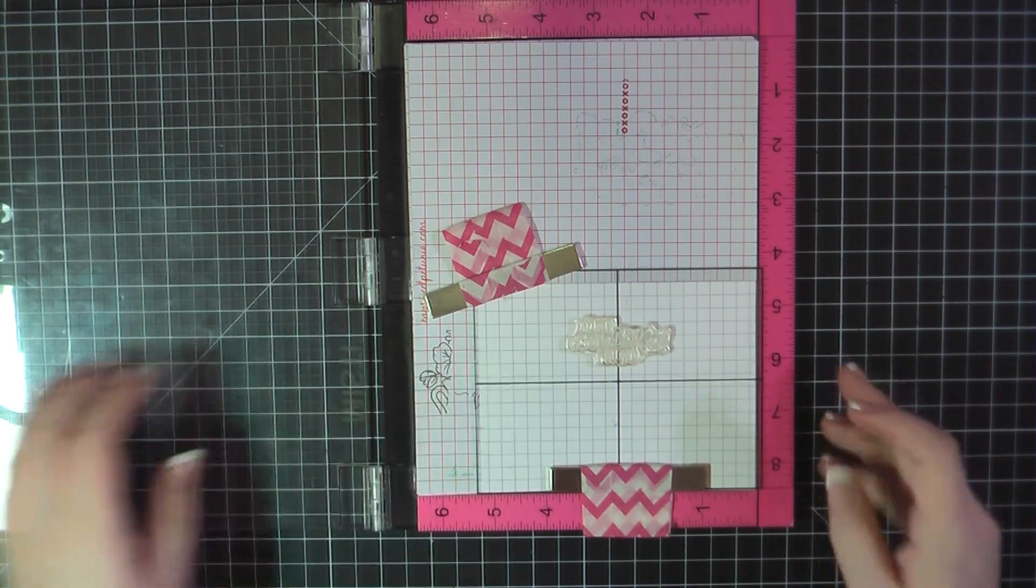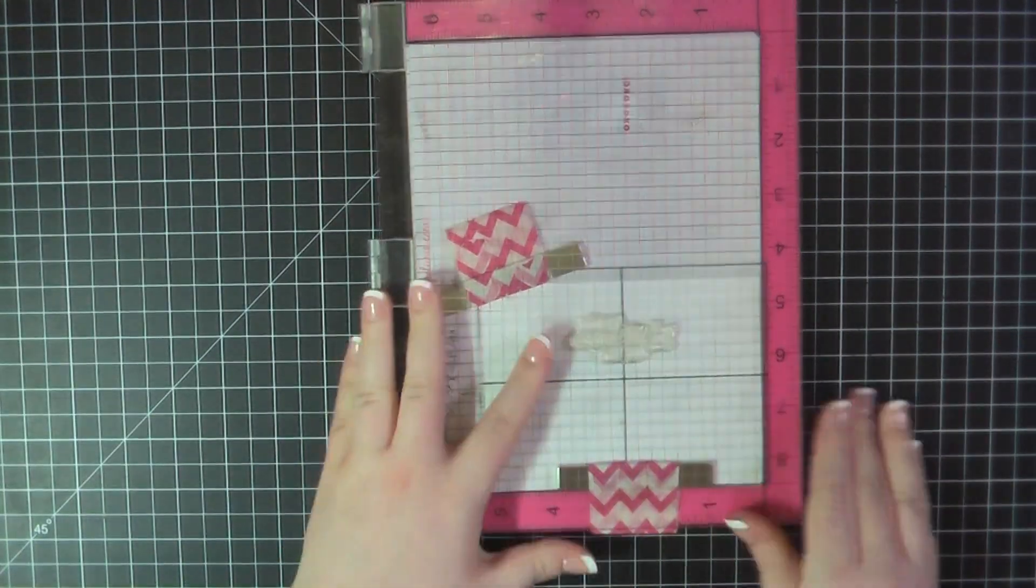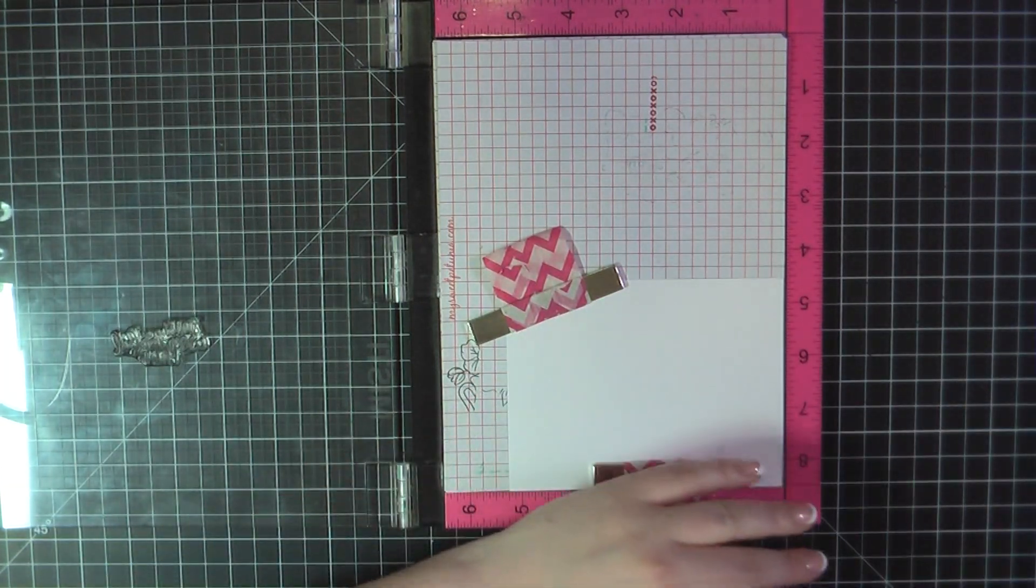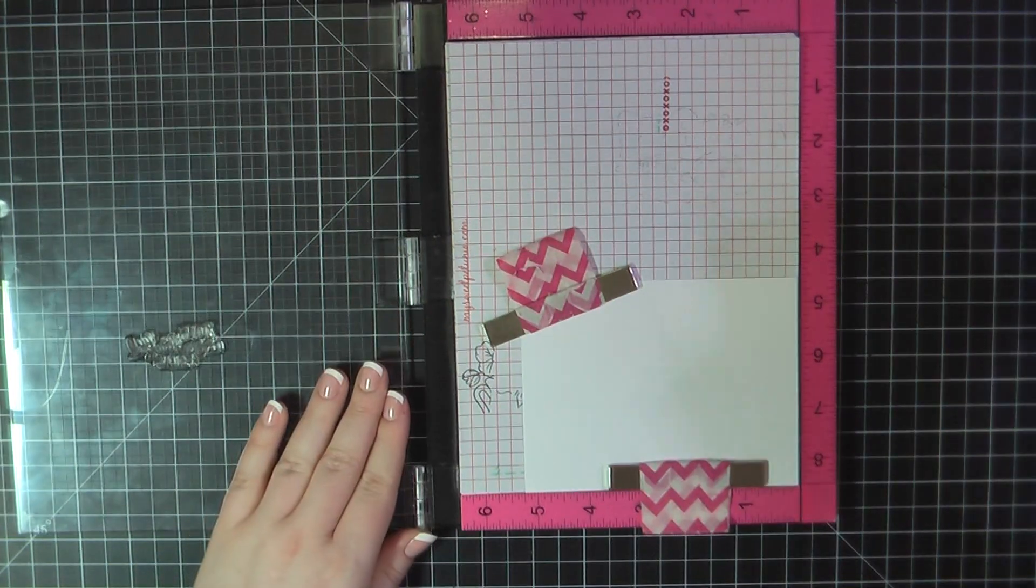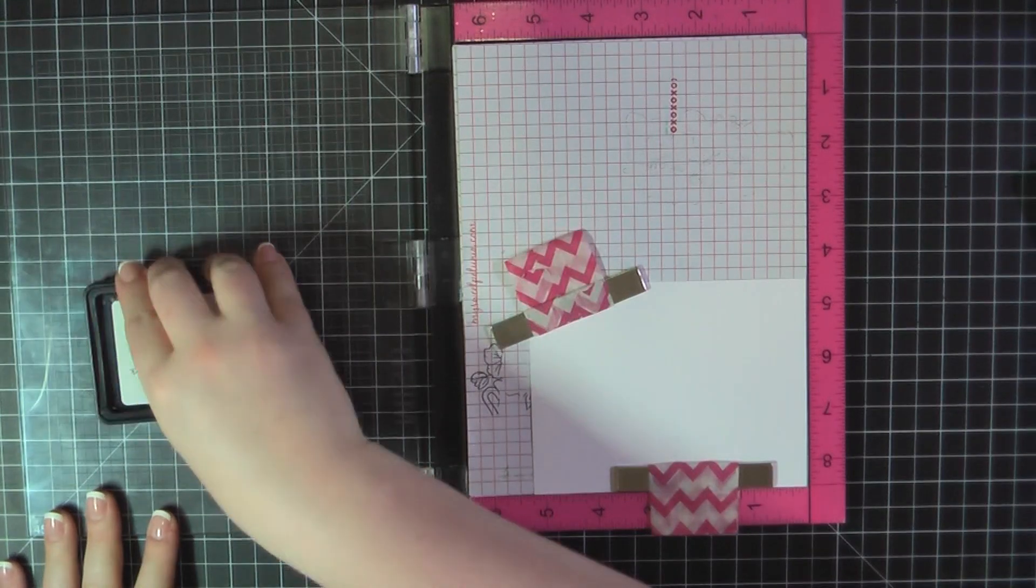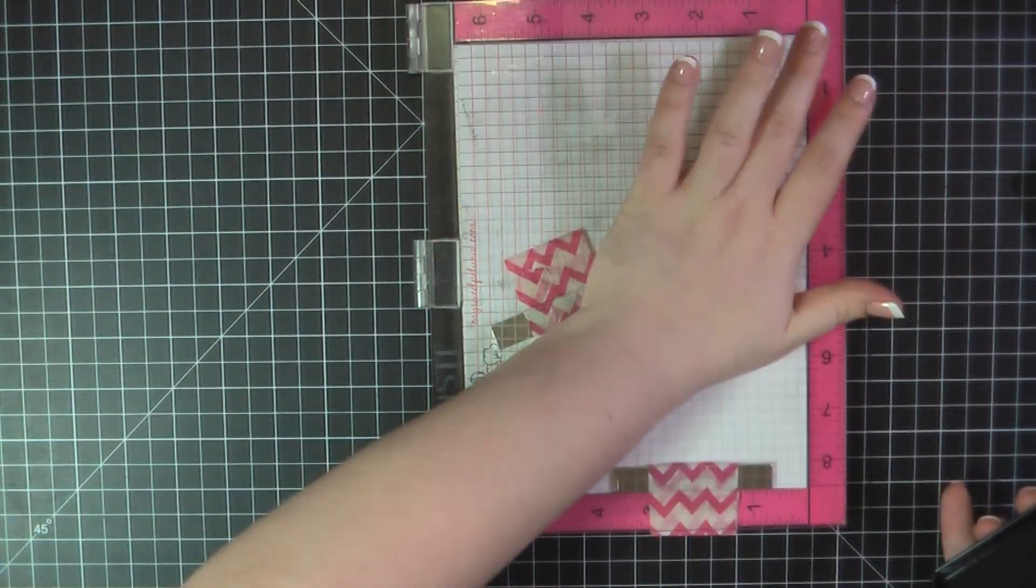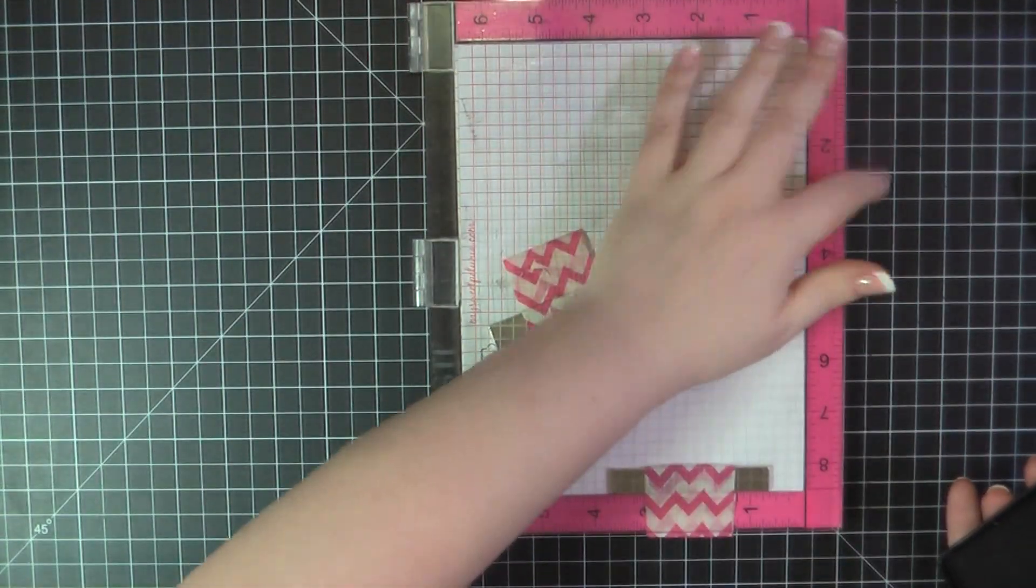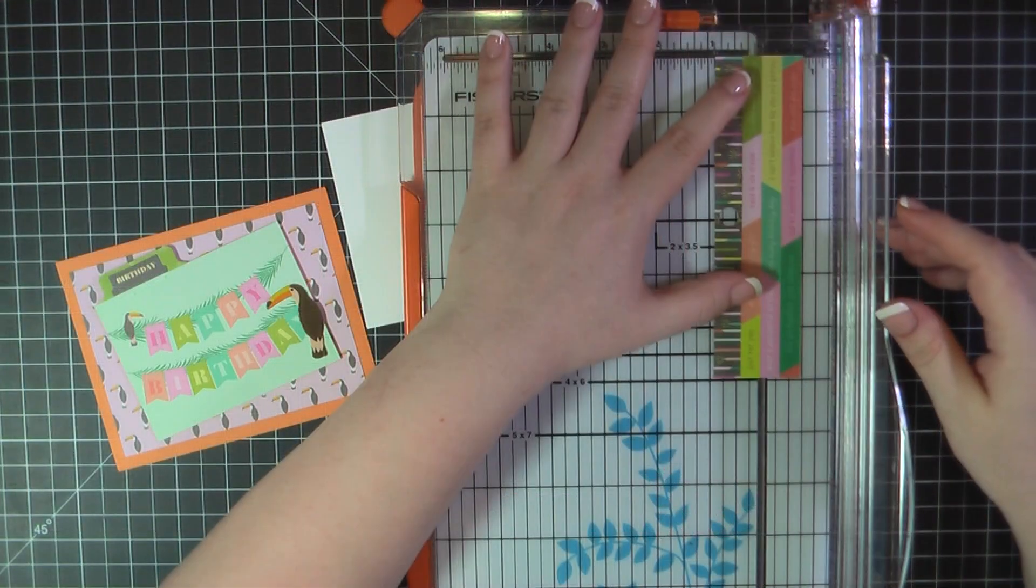For the inside, I'm going to stamp out the sentiment to my wonderful friend. This is from Simon Says Stamp It's No Secret Stamp Set. And I just love the font on it. I think it's really pretty. I'm grabbing my Simon Says Stamp Intense Black ink, and I'll go ahead and stamp that on a Neenah panel trimmed to 4x5.25.